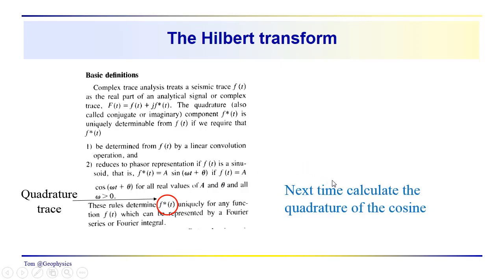A little bit long on this one, but next time we may take a look at some of the display attributes in Kingdom Suite. Either next time or the following, we'll talk about the calculation of the quadrature trace, and we'll look specifically at applying this idea to calculating the quadrature of the cosine - make it real simple. Obviously, if we take the quadrature of the cosine, we should get the sine. Thanks for joining me, and we'll see you next time.